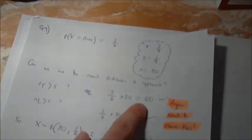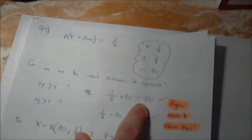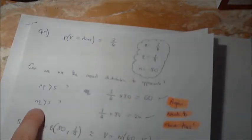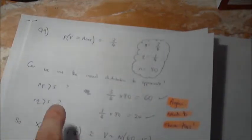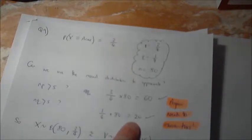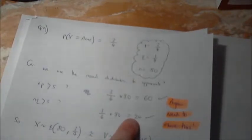times three quarters, and 60. Yes, it is. It's bigger than 5. What about NQ? NQ must also be bigger than 5. So again, NQ gets me 20. Yes, so we can. It is bigger than 5, so we can use the normal distribution to approximate.